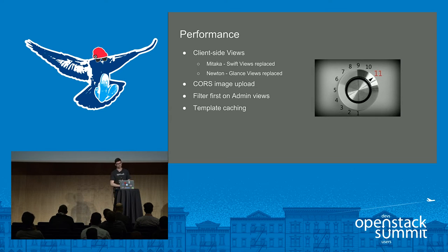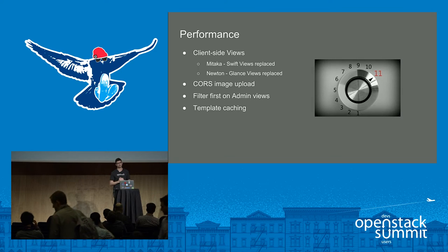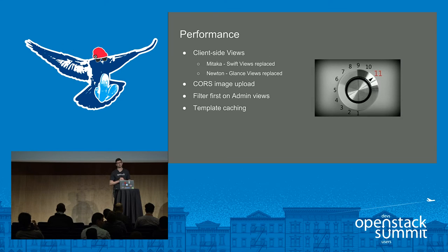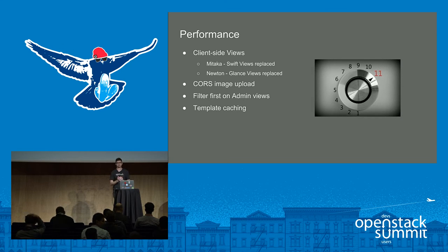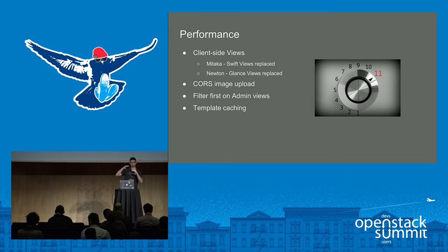Finally, we added template caching. When you're rendering views with hundreds of rows, a lot of that data is repeated — each table row is a template snippet that's identical but with slightly different data. We now cache that, so if you're rendering 500 rows it's just retrieving the same row from the cache and populating it with data.